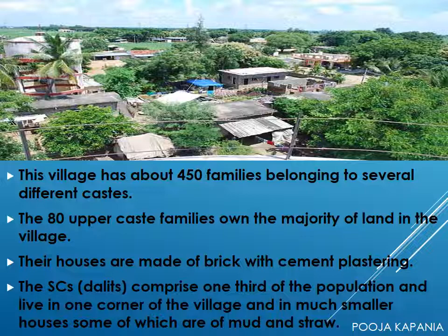The houses of these upper caste people are quite large and are made of brick and cement plastering. On the other hand, the SCs — that is the Scheduled Castes or the Dalits — comprise one third of the population and live in one particular corner of the village in much smaller houses, some of which are of mud and straw. Most houses have electricity connections; electricity powers all the tube wells in the fields and is used in various types of small businesses. Palampur also has two primary schools and one high school, a primary health care centre run by the government, and one private dispensary where the sick are treated.